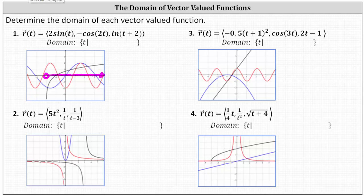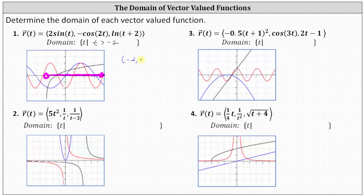Using set builder notation, we have t such that t is greater than negative two. Using interval notation, we can also express the domain as the open interval from negative two to infinity.